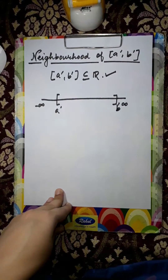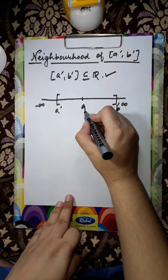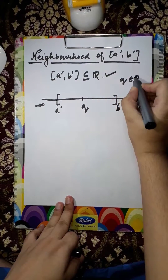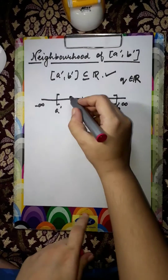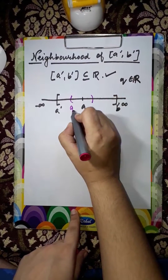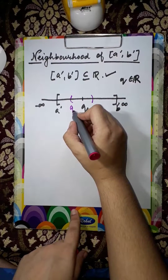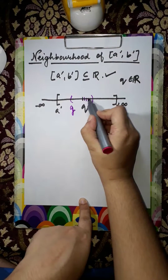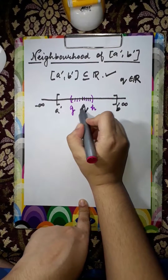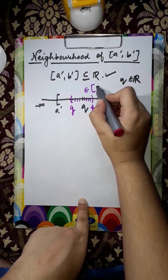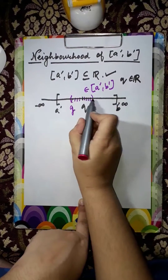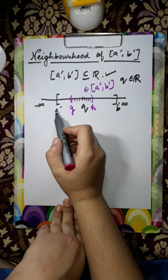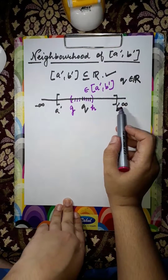Let us consider any point q between the closed interval [a', b'], so q belongs to real numbers. We will draw an open interval (g, h) around this point q. We check that all the points lying on the left and the right hand side of q belong to the closed interval [a', b'], meaning this whole open interval belongs to the set.